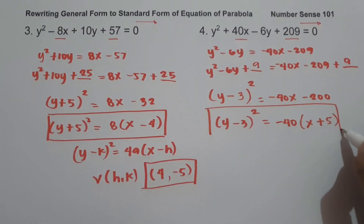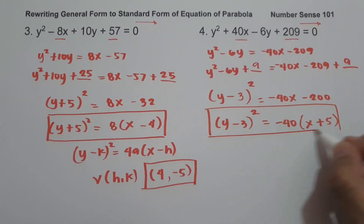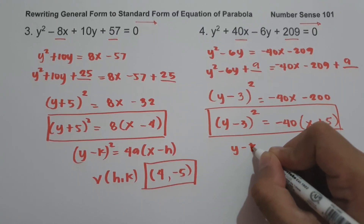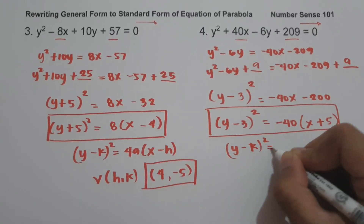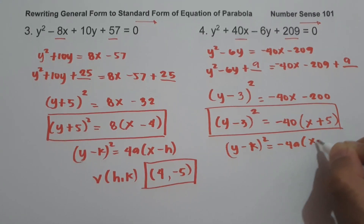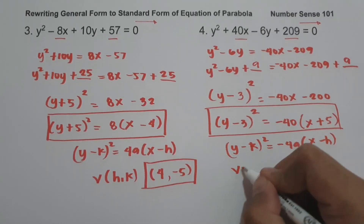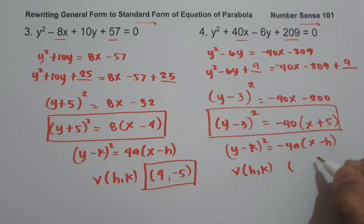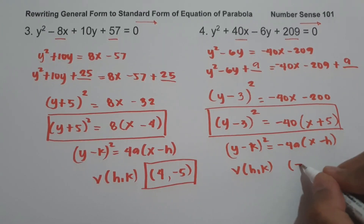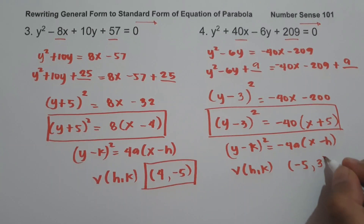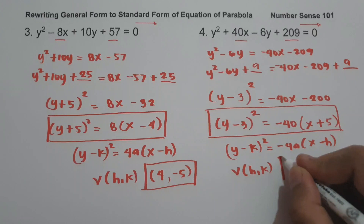This gives our standard form: (y - 3)² = -40(x - 5). This is written in the form (y - k)² = -4a(x - h). Our vertex (h, k): h is -5, which is the opposite sign of +5, and k is +3. So the vertex is (-5, 3).